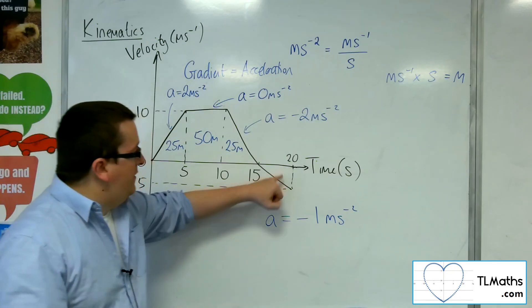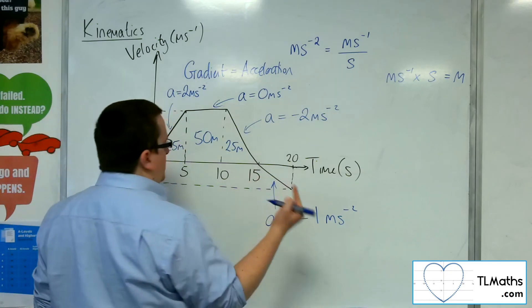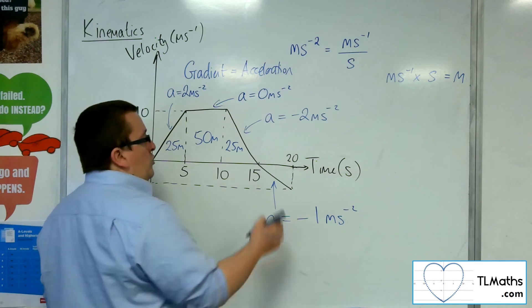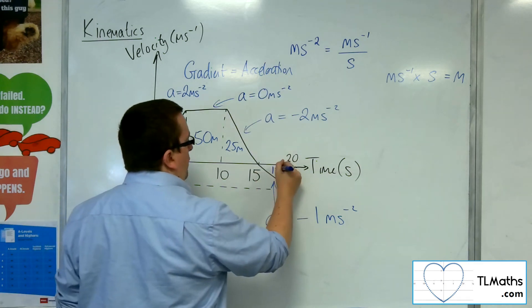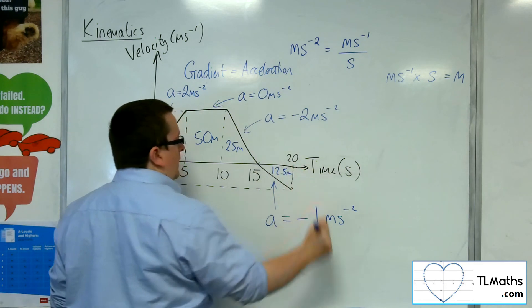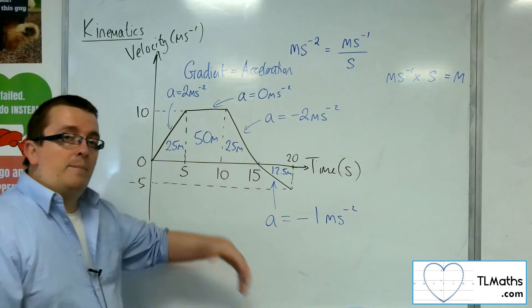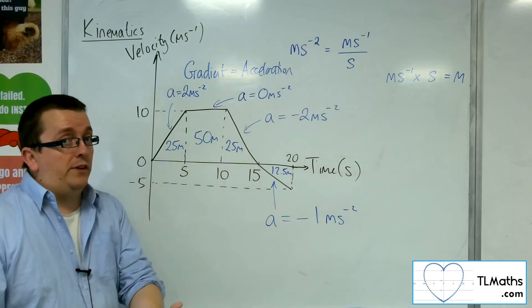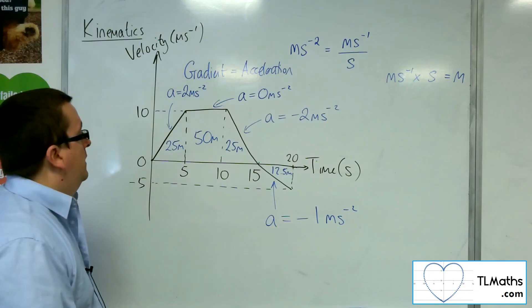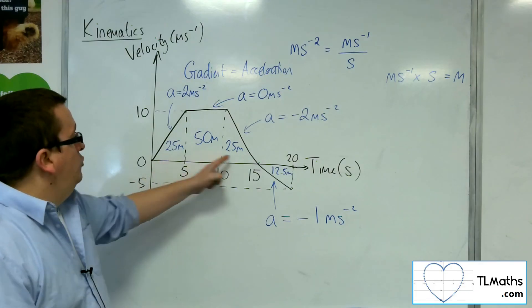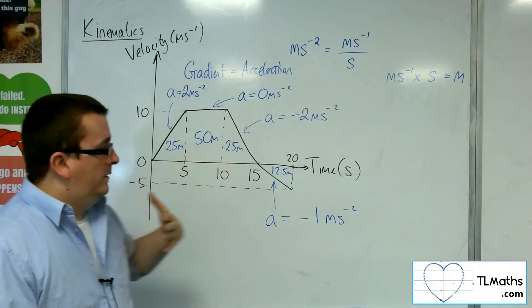And then finally, in this triangle, I've got half base times height, which would be half of five times five, so 12 and a half metres. Now if you were talking about, well, what was the total distance that was travelled? Well, we went 100 metres in that direction, and then I went 12 and a half metres back in this direction.